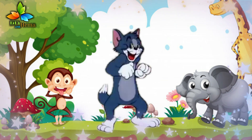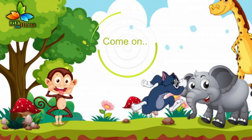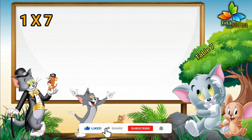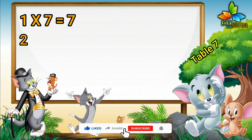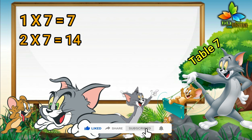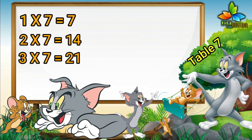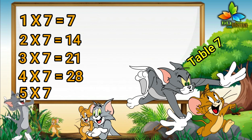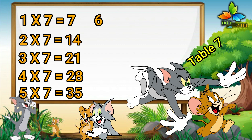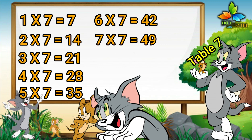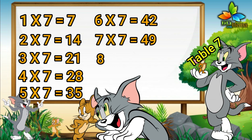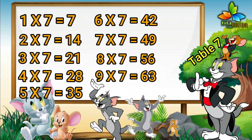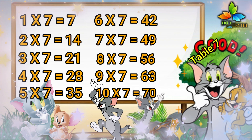Hello goodies. Shall we repeat? Come on, let us say. One, seven is seven. Two, sevens are fourteen. Three, sevens are twenty-one. Four, sevens are twenty-eight. Five, sevens are thirty-five. Six, sevens are forty-two. Seven, sevens are forty-nine. Eight, sevens are fifty-six. Nine, sevens are sixty-three. Ten, sevens are seventy.